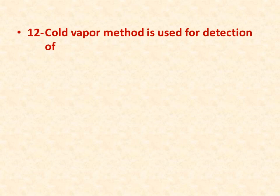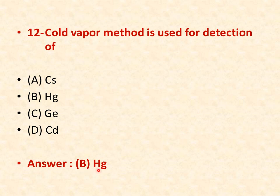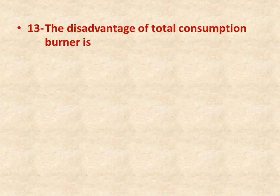Question number twelve: cold vapor method is used for the detection of — options: A is cesium, B is mercury, C is germanium, D is cadmium. The right answer is B — the cold vapor method is designed for the detection of mercury.